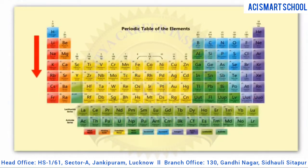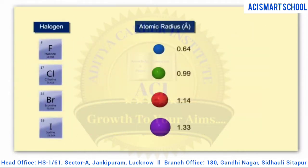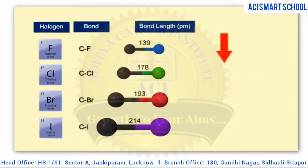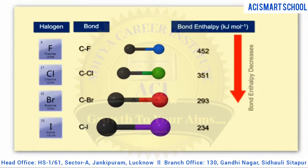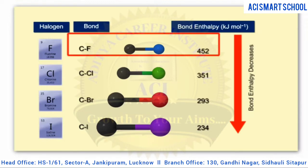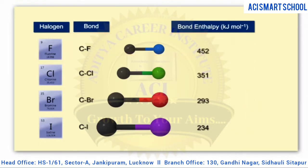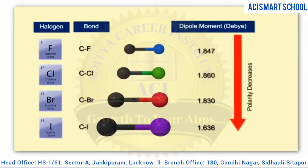The atomic radii typically increases down a column — a trend that we observe from fluorine to iodine. Thus, the carbon-halogen bond length increases as we go from a carbon-fluorine bond to the carbon-iodine bond. As the bond length increases, the bond enthalpy decreases. This means that less energy is required to break the carbon-iodine bond compared to the carbon-fluorine bond. Additionally, as the halogen atom becomes less electronegative from fluorine to iodine, the carbon-halogen bond becomes less polar.